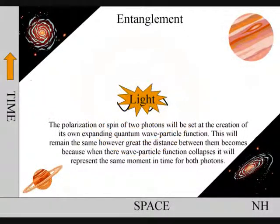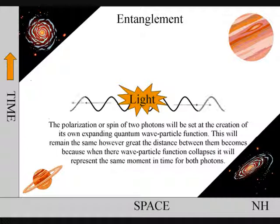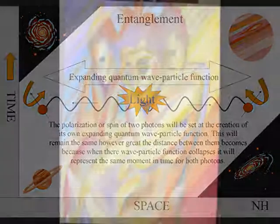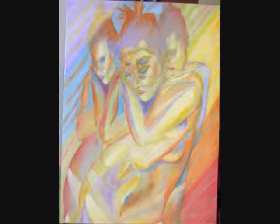We have entanglement because light moves through space but not time as a wave particle function. The polarization of two photons will be set at the creation of its own expanding quantum particle wave function. This will remain the same however great the distance between them becomes, because when their wave particle function collapses, it will represent the same moment in time for both photons.